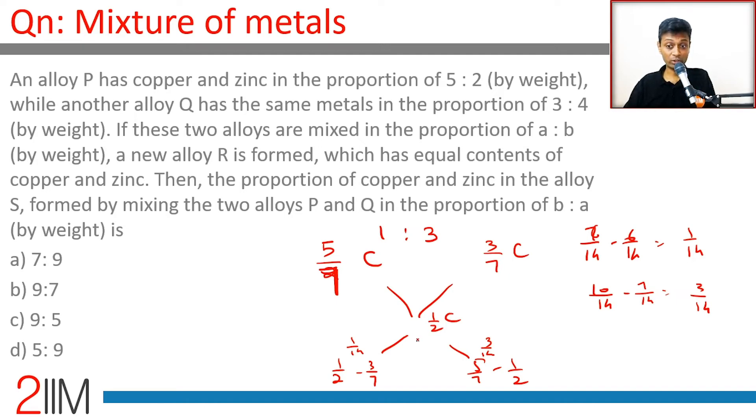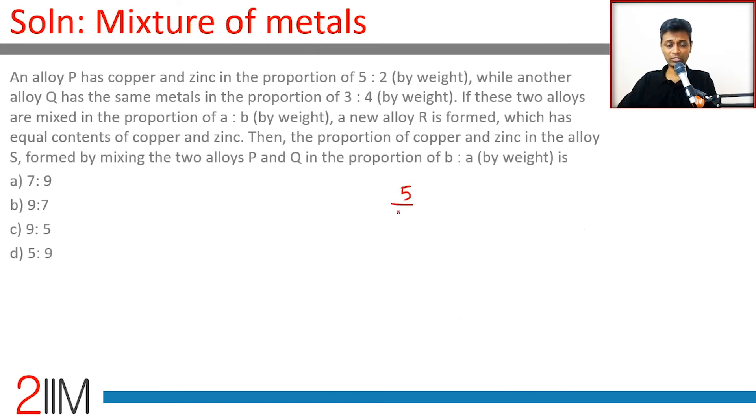Now we are not doing 1:3, we are doing 3:1. So how will this turn out? We are thinking about only copper, so 5/7 copper times 3 plus 3/7 copper times 1 divided by 4.